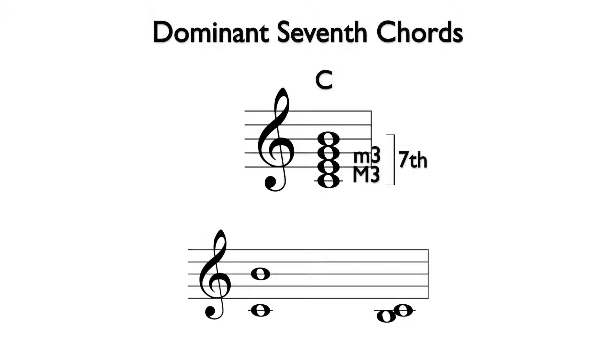To easily identify if the interval from C to B is a minor seventh, we can invert the interval. To invert an interval we change which of the two notes is on the bottom. Let's move the B down an octave so that it is now below the C. B to C is a half step or a minor second.